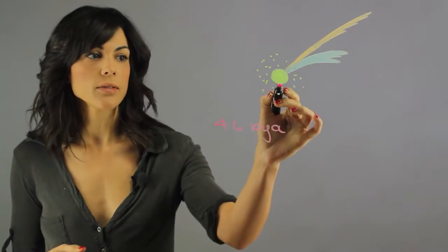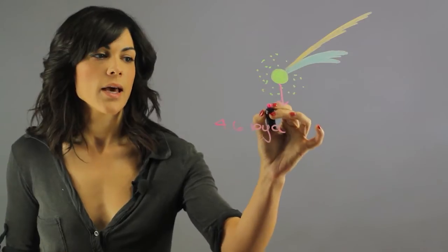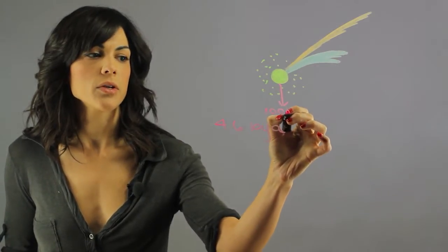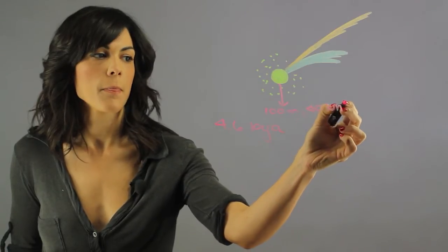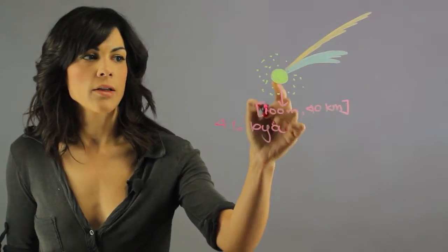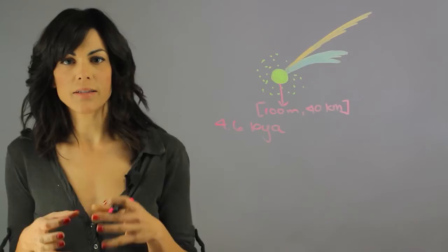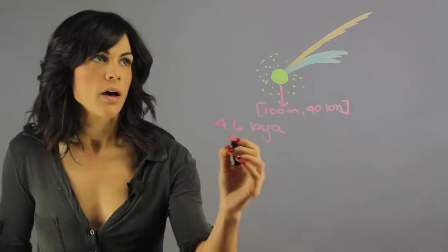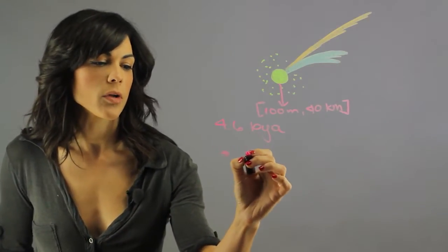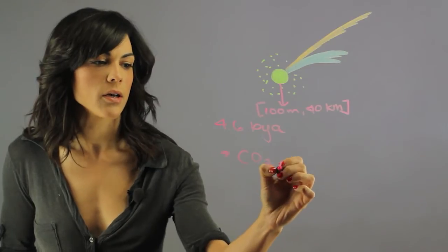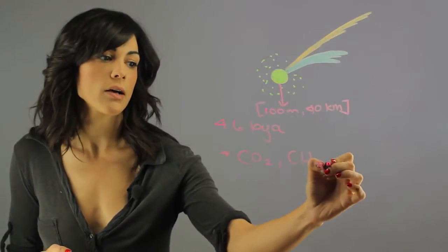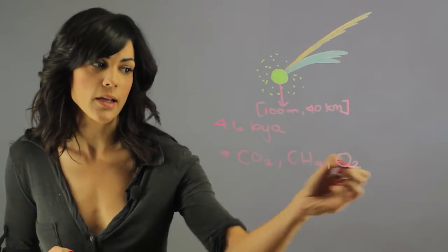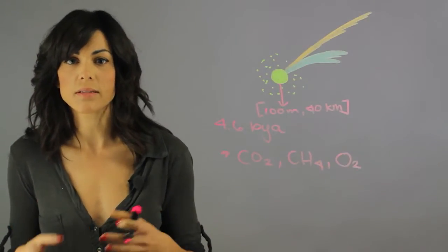A comet is made out of a nucleus, and a nucleus is between 100 meters to 40 kilometers in size. This is generally gases and ice and embedded rock. It also can be found carbon dioxide, methane has been found in them, ethane has been found in it, oxygen has been found in it, and a lot of types of amino acids and so forth.